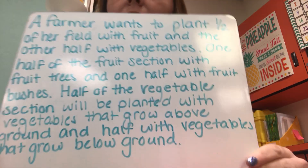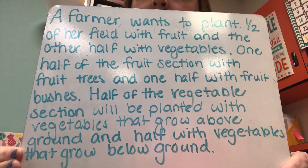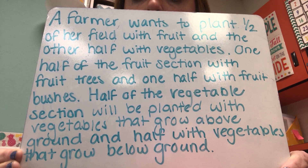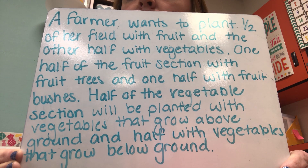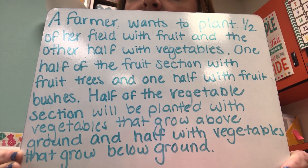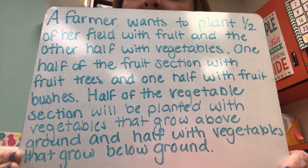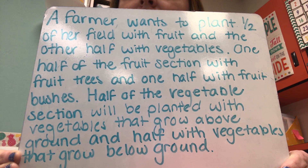The first problem that I want us to look at is right here. It says a farmer wants to plant one half of her field with fruit and the other half with vegetables. One half of the fruit section will be planted with fruit trees and one half with fruit bushes. Half of the vegetable section will be planted with vegetables that grow above ground and half with vegetables that grow below ground.